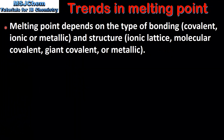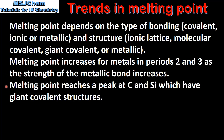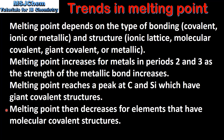The melting point of a substance depends on the type of bonding — that's covalent, ionic or metallic — and the structure, that's ionic lattice, molecular covalent, giant covalent or metallic. The melting point increases for metals in periods 2 and 3 as the strength of the metallic bond increases. Across periods 2 and 3 the melting point reaches a peak at carbon and silicon which have giant covalent structures. The melting point then decreases for elements that have molecular covalent structures. The different types of structure and bonding will be covered in topic 4.